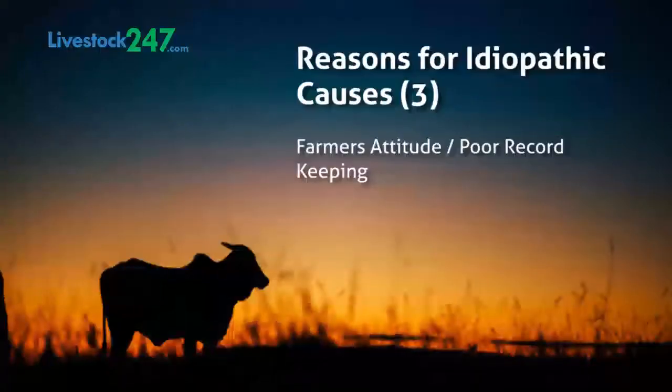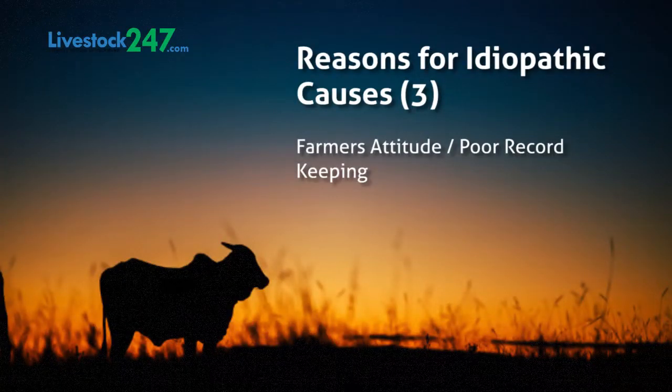Another reason we have this idiopathic category — where we know abortion occurred without attributing it to a particular cause — is because of people's attitude. Many people decide to use drugs without even knowing whether their livestock are pregnant or not, and those drugs eventually lead to abortion. And sometimes they don't keep records, so they put the livestock under stress, and eventually the livestock experience abortion. All of these are the reasons why abortion occurs in livestock.